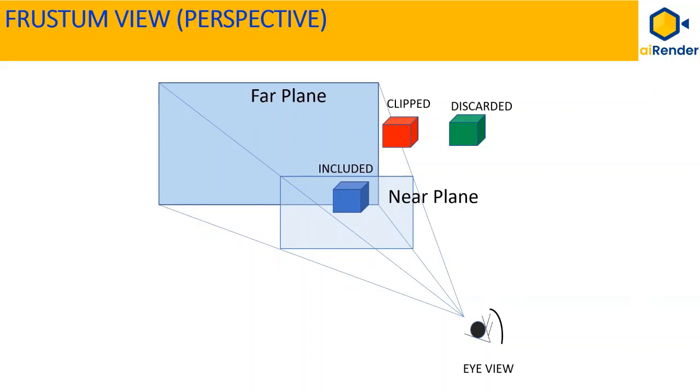Here again, the objects within the view box or clip space volume as it is called, like the blue cube are captured in the view. The ones on the boundary like the red cube are clipped and the green cube outside the frustum view is discarded.